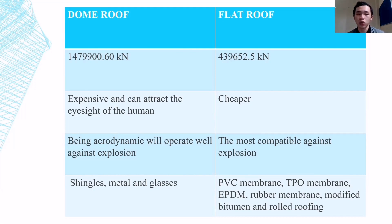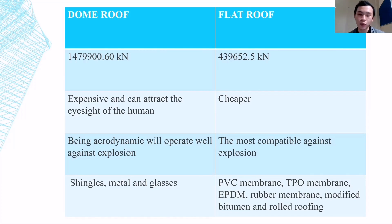When we want to make a dome roof, it is very expensive, and it can only attract the eyesight of people aesthetically. Compared to the flat roof, it's cheaper. The dome roof has the advantage of being aerodynamic and performs well against strong winds, while the flat roof is the most cost-effective option against wind loads. The materials for the dome roof are stainless metal and glass, while for the flat roof the materials include PVC membranes, steel TPO membranes, EPDM rubber membranes, modified bitumen, and built-up roofing.